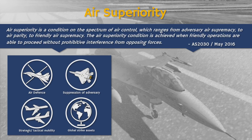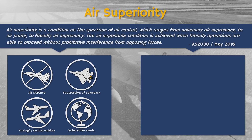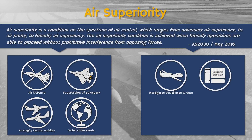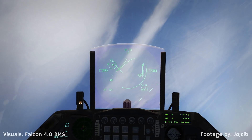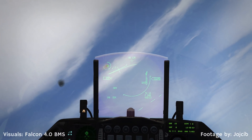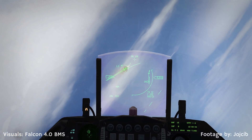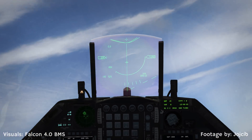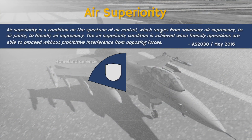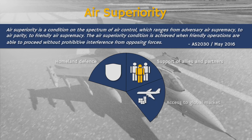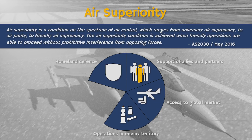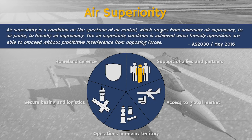However, these capabilities do not present the full picture. Several equally important capabilities are in intelligence, surveillance and reconnaissance, cyberspace, logistics, and space. Air superiority is so important because it exponentially increases the overall capabilities of joint operations. For example, air superiority guarantees homeland defense, support of allies and security partners, access to the global economic market, operations in enemy territory of both tactical and strategic nature, and secure basing and logistics that allows tactical and strategic flexibility.